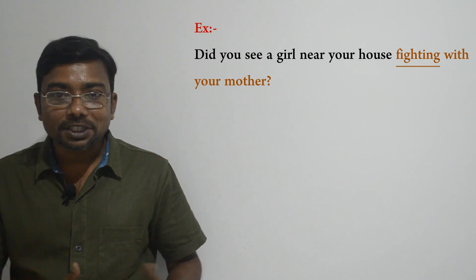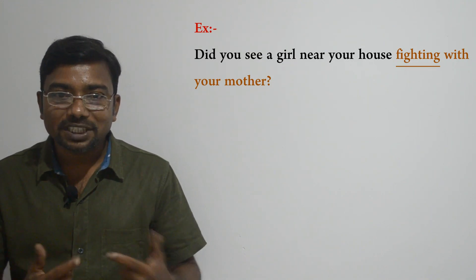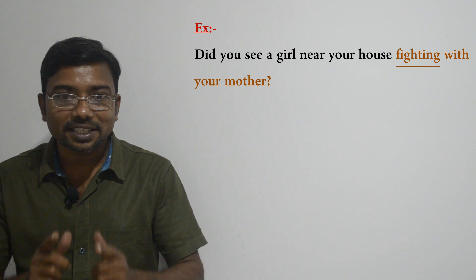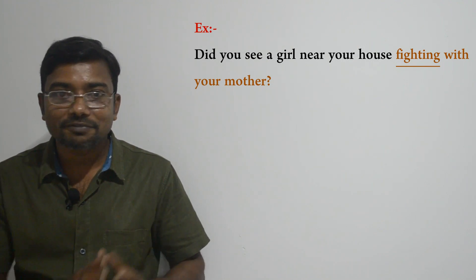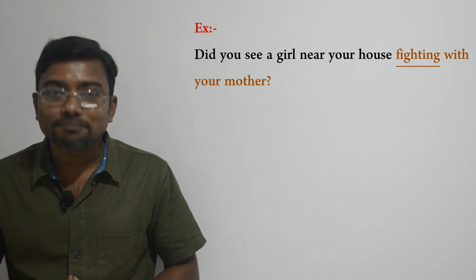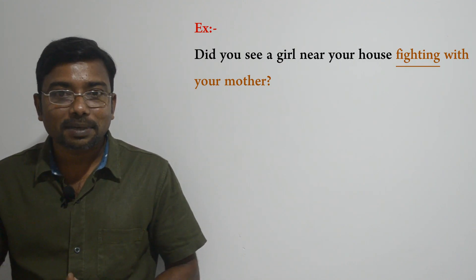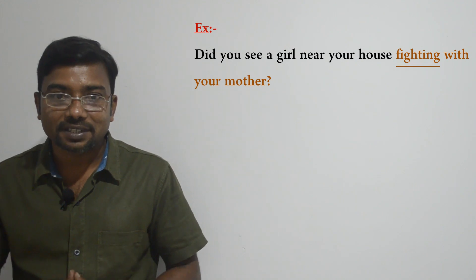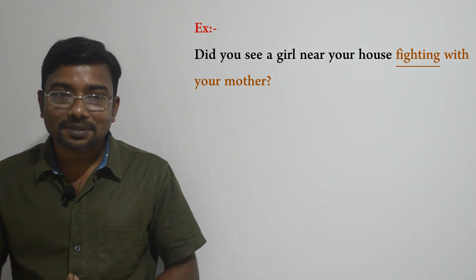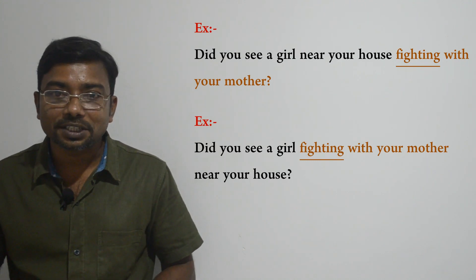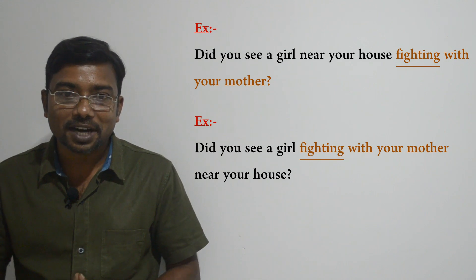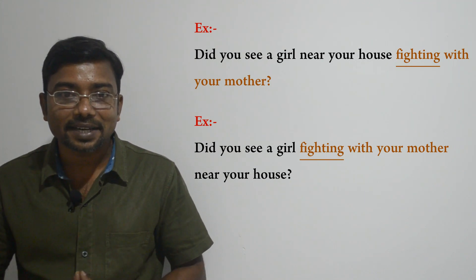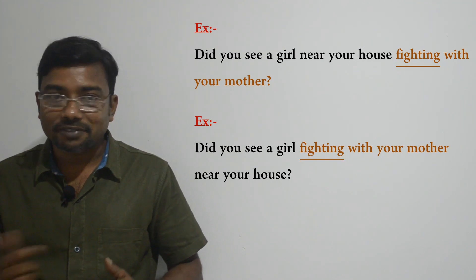Look at this example: 'Did you see a girl near your house fighting with your mother?' What do you think about this sentence — is it right or wrong? This is grammatically wrong because the participle phrase 'fighting with your mother' does not appear directly before or after the noun or pronoun it modifies. Who is fighting with your mother? The girl. The participle phrase is meant to modify the noun 'girl,' but it does not appear directly after 'girl.' Now look at this corrected version: 'Did you see a girl fighting with your mother near your house?' This is correct because 'fighting with your mother' now stands directly after the noun 'girl' to modify it.